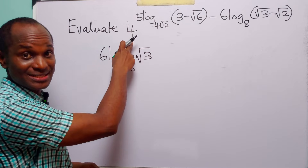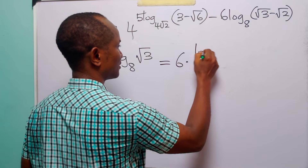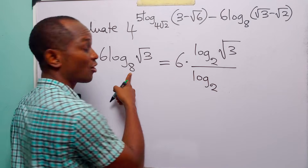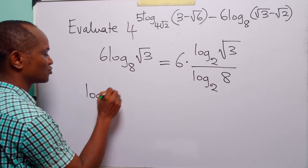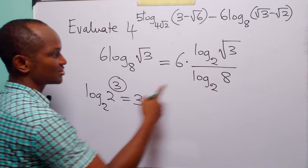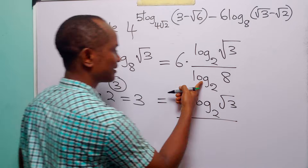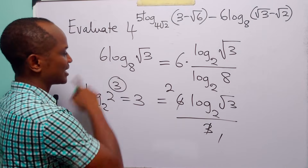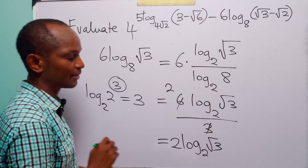Since we have 4 as the base here, let us change this from base 8 to base 2. This is equal to 6 times log to base 2 of root 3 divided by log to base 2 of 8. You know that 8 equals 2 to the power 3, so log to base 2 of 8 equals 3. Therefore, this equals 6 times log to base 2 of root 3 divided by 3. Since 3 divides into 6 twice, we have 2 times log to base 2 of root 3.